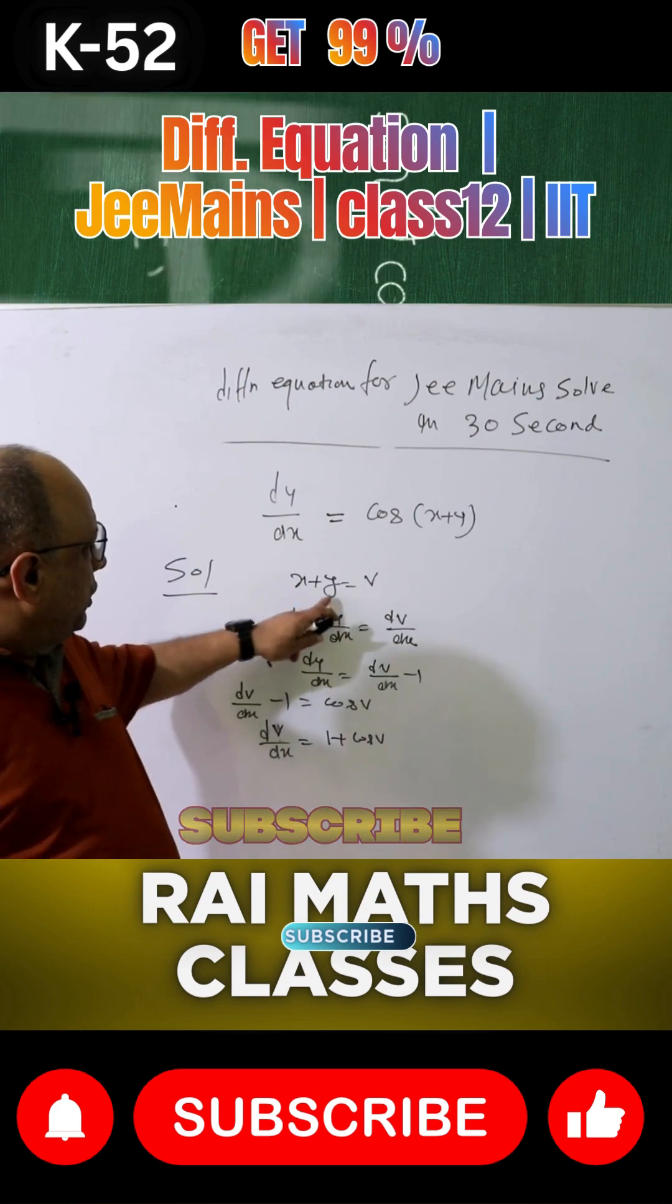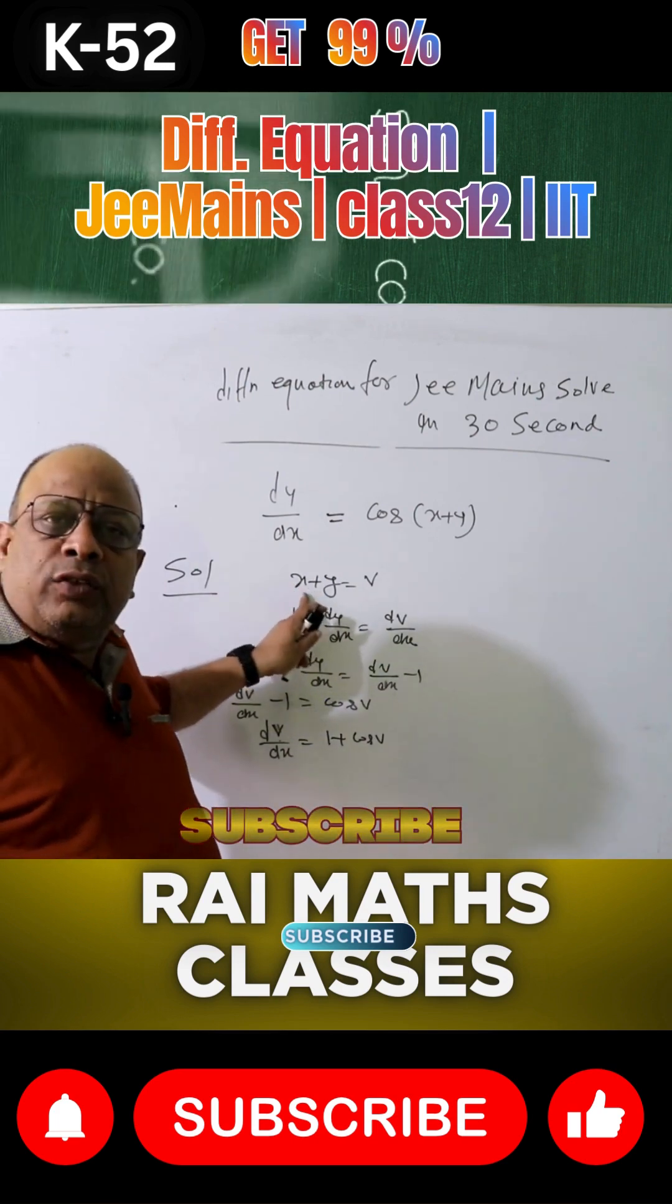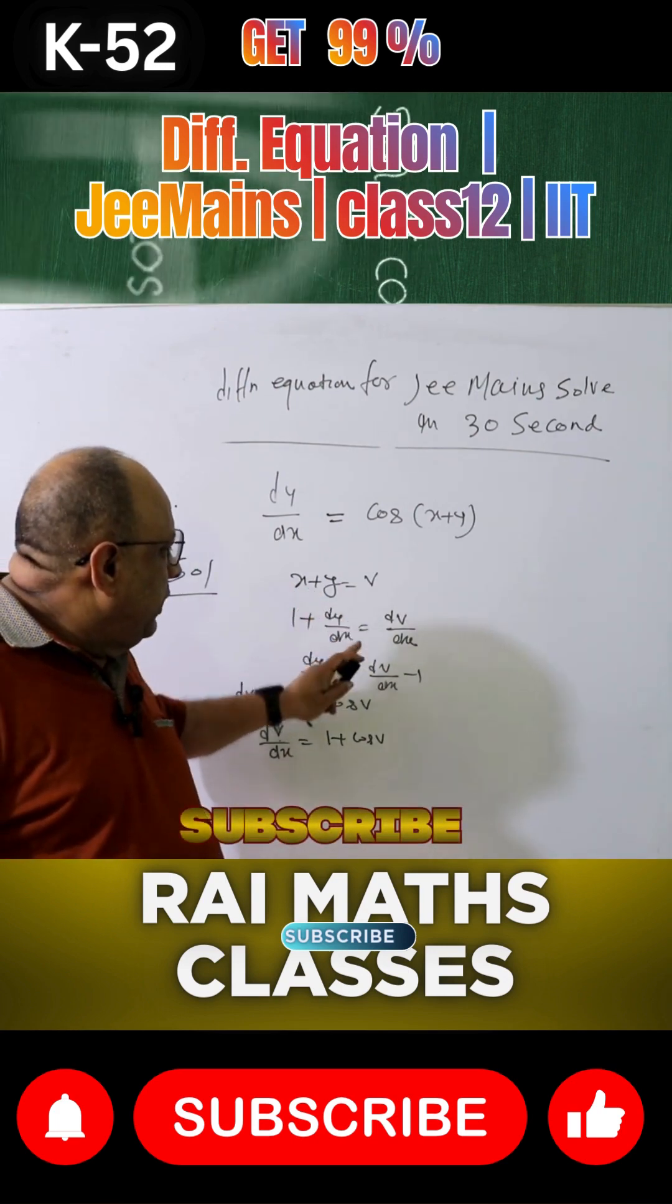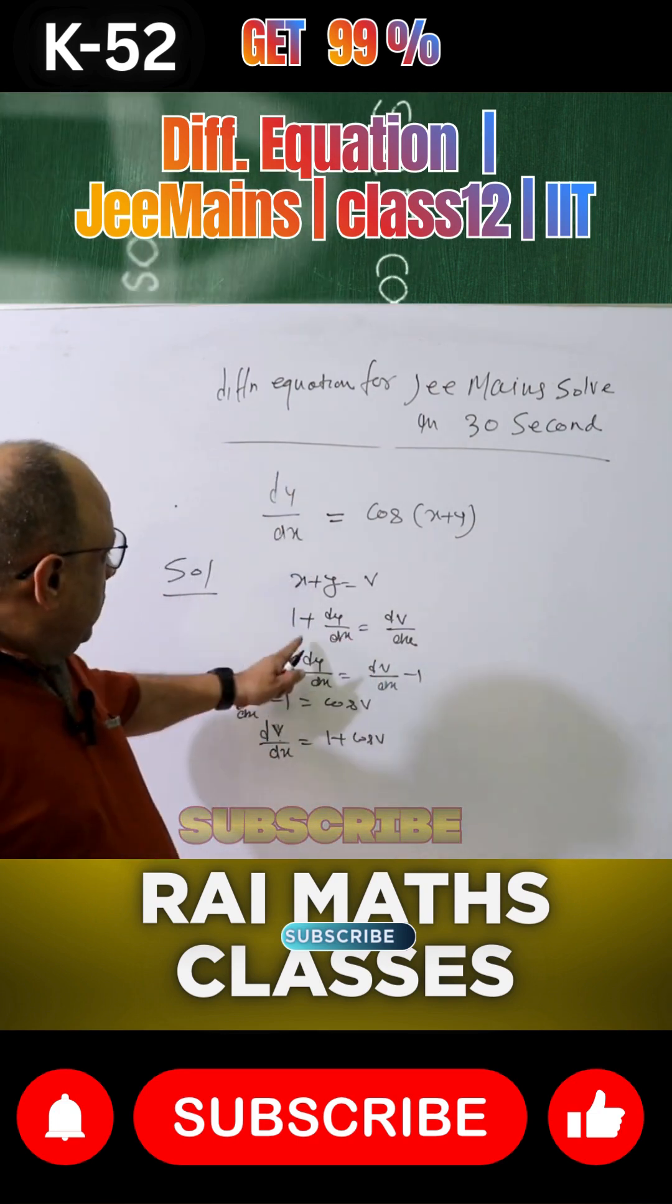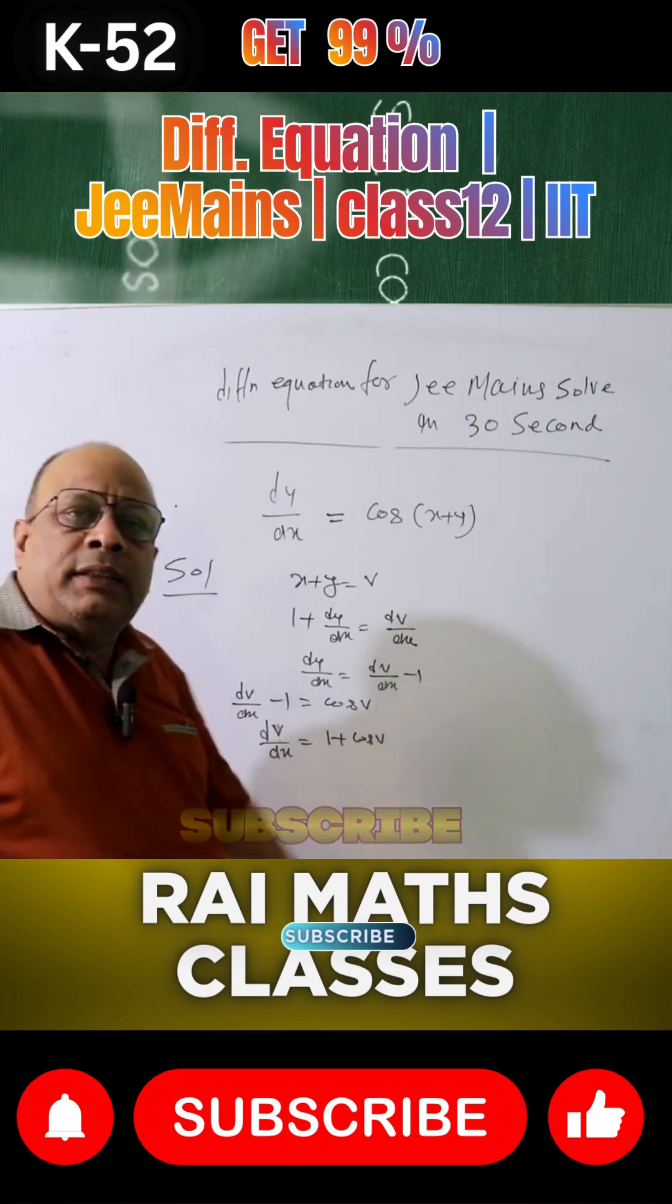If we differentiate this, x differentiates to 1, y differentiates to dy/dx. So dv/dx equals 1 plus dy/dx. Therefore, dy/dx equals dv/dx minus 1.